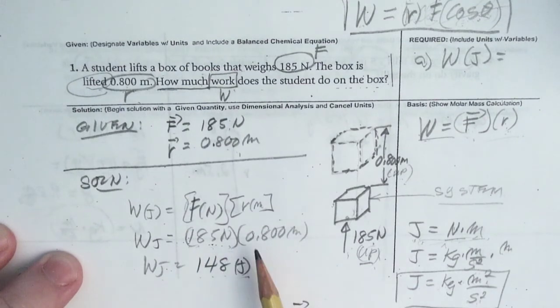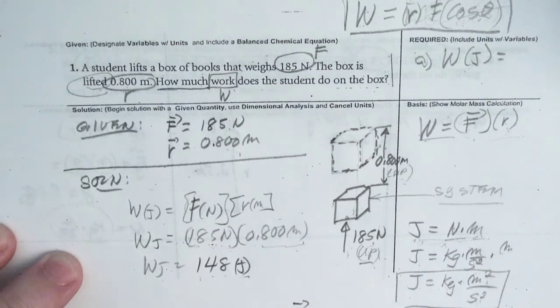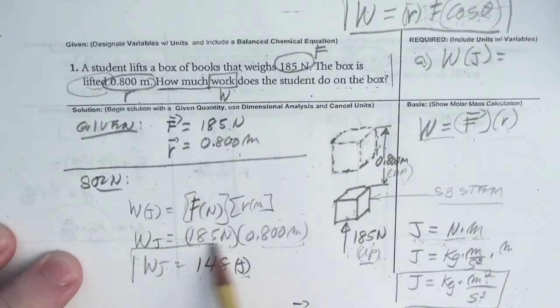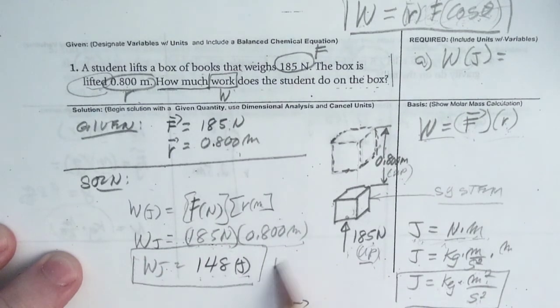So 185 newtons times 0.8 meters will give you 148 joules. Check.